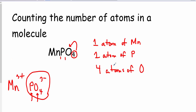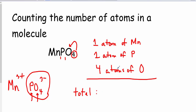To find the total number of atoms in manganese phosphate, I simply add them up: one plus one plus four is six. So altogether, in one molecule of this compound, there are six atoms.